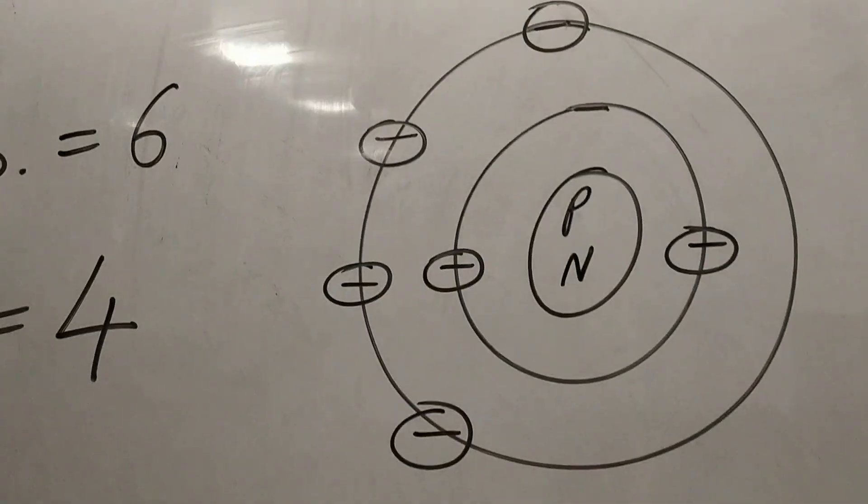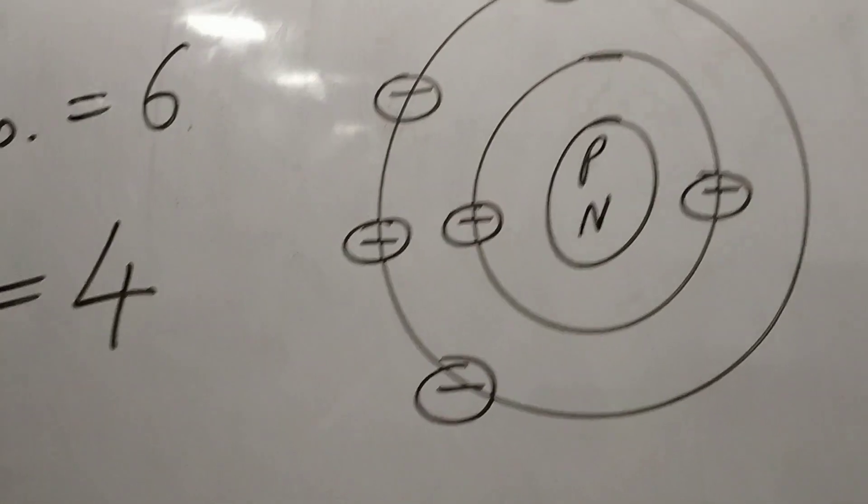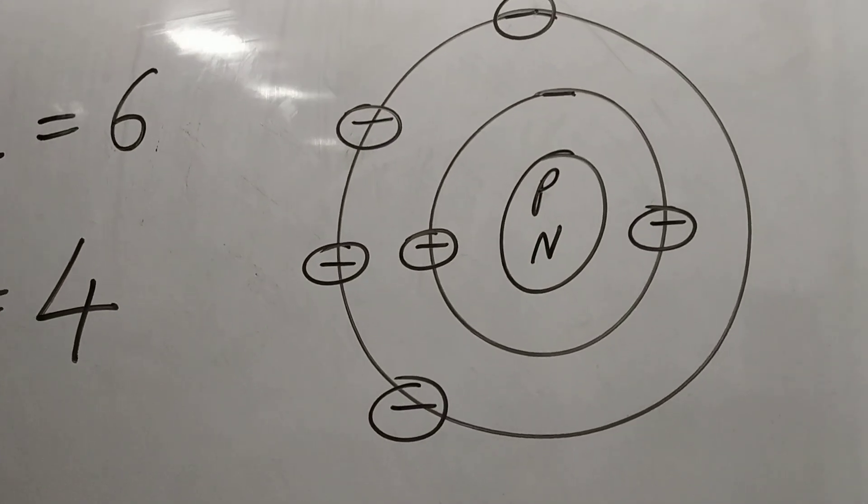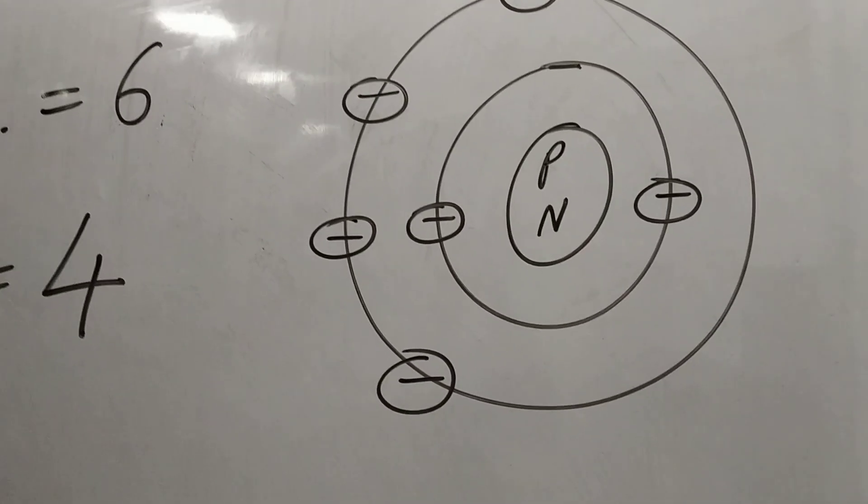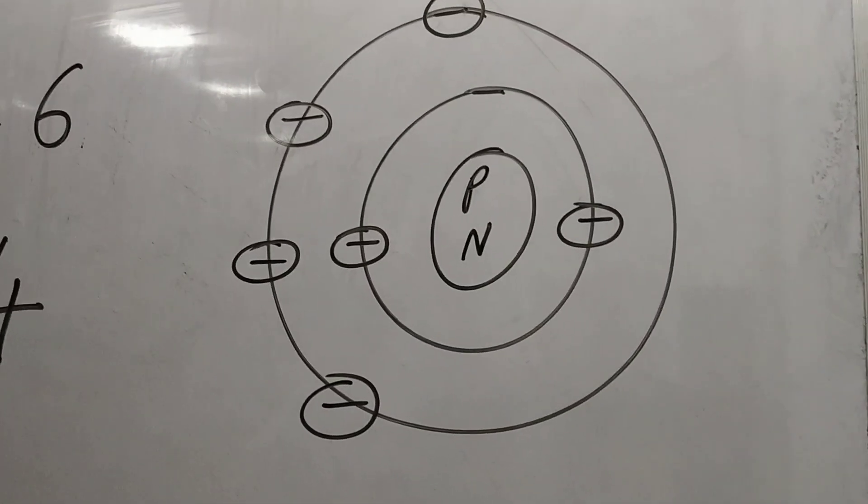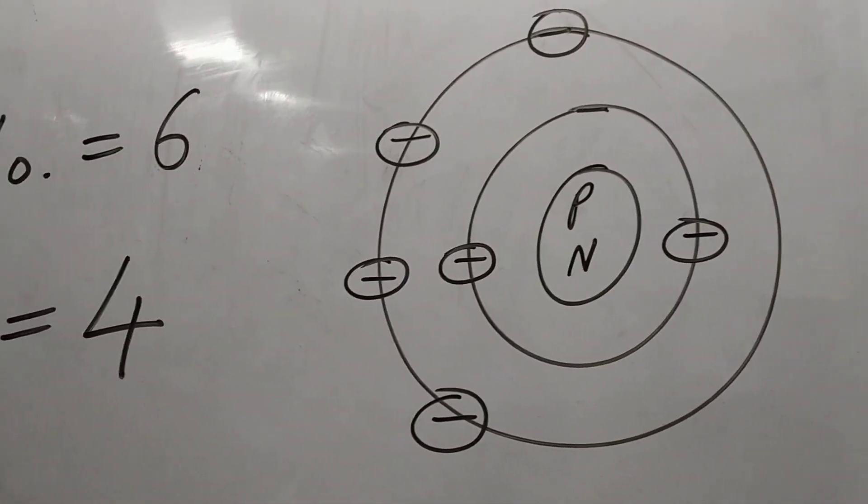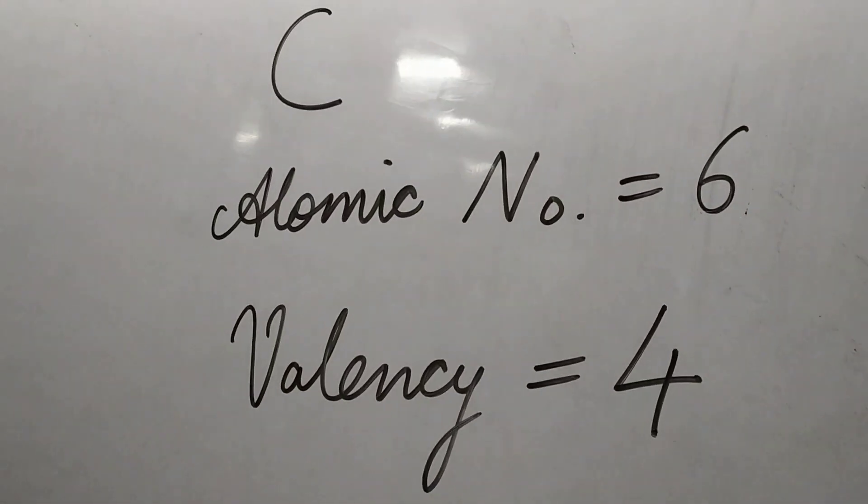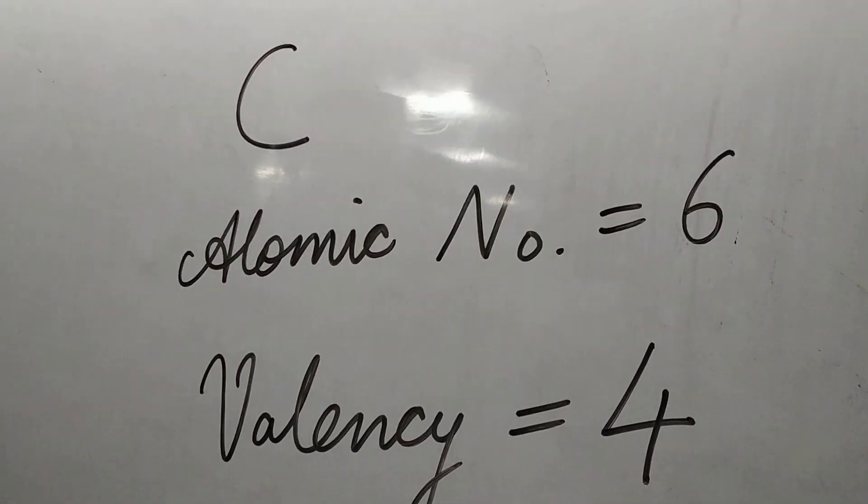They would share electrons. So with the other carbon atom, it would share electrons and complete the octet of the carbon one atom as well as the carbon two atom, thereby forming the octet for both of them. So the valency of carbon is simply four.